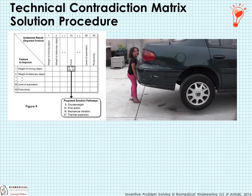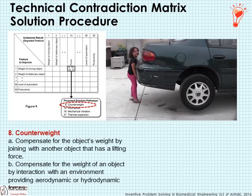Another one of the inventive principles was counterweight, defined as compensating for an object's weight by joining it with another object that has a lifting force, or compensating by interaction with an environment providing aerodynamic or hydrodynamic forces. In movies, actors can lift heavy objects like the back of a car because there's a counterweight making it very light. For the cerebral palsy example, instead of rubber bands, maybe there is a counterweight on the back of the exoskeleton, or some kind of overhead pulley that provides a lifting force.